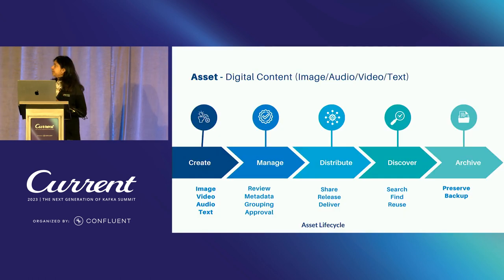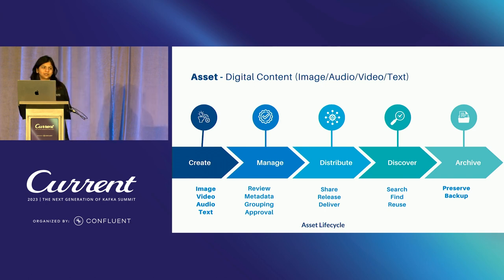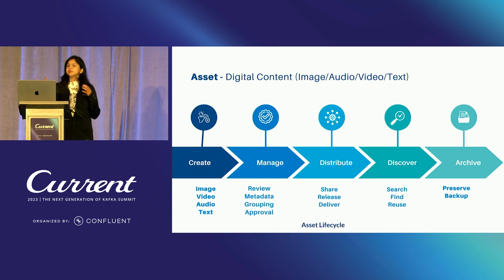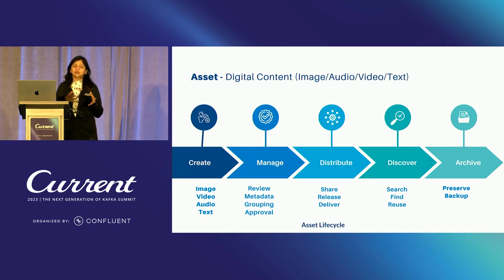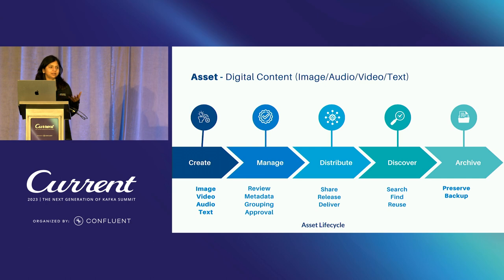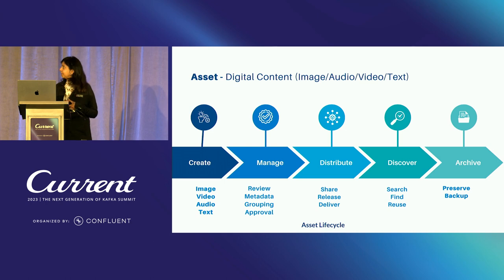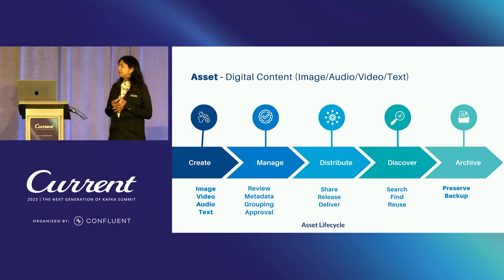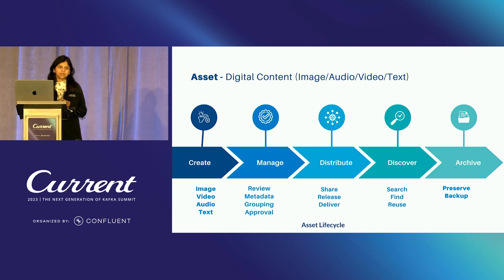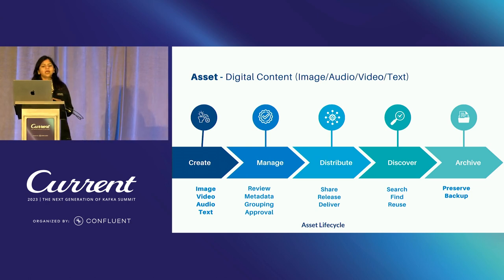An asset goes through multiple stages in its lifecycle. Each stage is mapped to multiple standard tasks. During the creation stage, an asset is ingested into our centralized asset management platform where we validate the content, inspect it, and depending on the content type, execute multiple tasks. In the management stage, assets are tagged and categorized. For distribution with global vendors working on animation and visual effects, we have to execute multiple tasks on the assets.